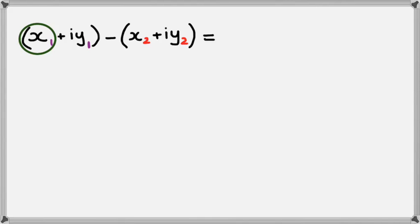We collect the real parts, x1 and x2, except when we write it up, it's going to be x1 minus x2, which is the real part.